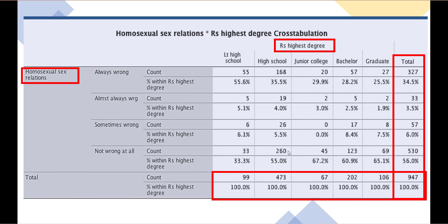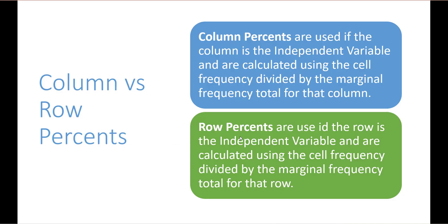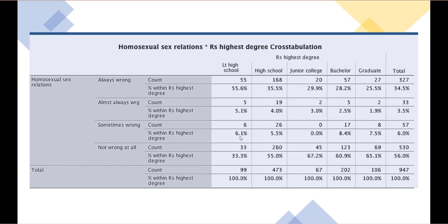When we look at these tables, we will be looking at either column percents or row percents. We use column percents if the column is the independent variable — the variable that is doing the explaining — and we calculate these column percents using the cell frequency divided by the marginal frequency total for that column. Row percents are used if the row is the independent variable, calculated using the cell frequency divided by the marginal frequency total for that row. You can tell we are using column percentages because 100% appears at the bottom of the columns.